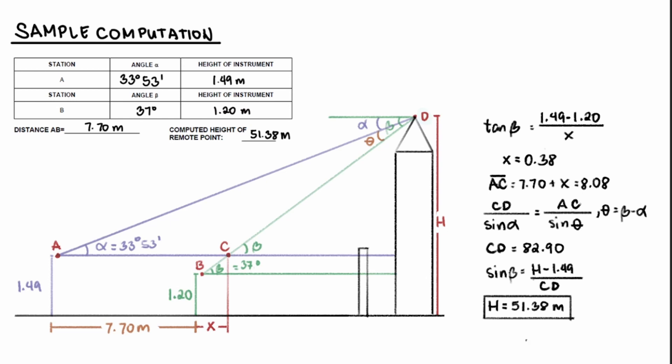Looking at our figure, we can see that we have a triangle ACD. Let's first get the location of C, which is x distances away horizontally from B. In order to get x, let's look at this other smaller triangle.